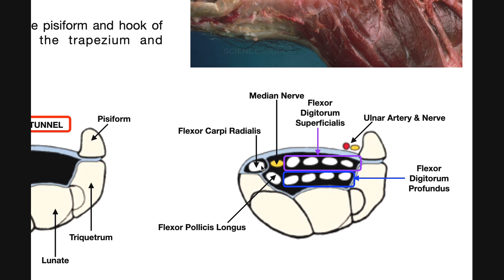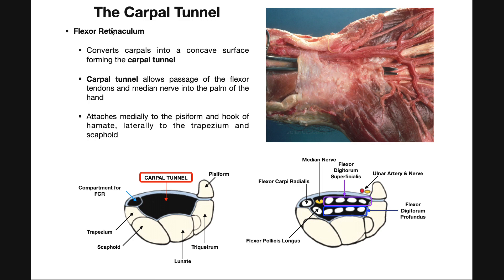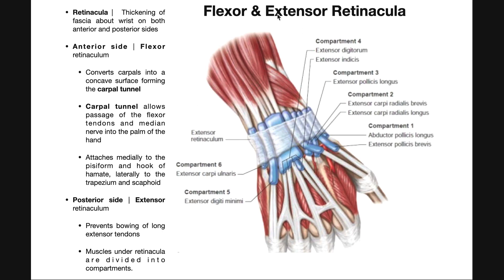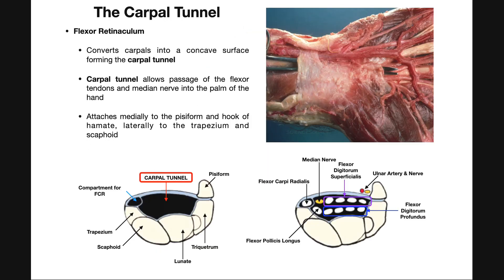So here you have all 11 structures in the carpal tunnel: four tendons from flexor digitorum superficialis, four tendons from flexor digitorum profundus, the deep flexor pollicis longus tendon, the superficial median nerve, and the presidential tunnel for the flexor carpi radialis tendon. If you have inflammation of structures in the carpal tunnel, it's most likely going to affect the median nerve because that's the only nerve going through. The flexor retinaculum plays a more complicated role than the extensor retinaculum because there's no carpal tunnel on the extensor side — only on the flexor side.